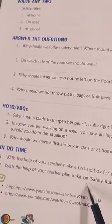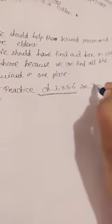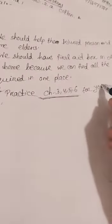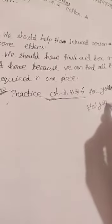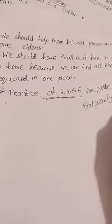With the help of your teacher, make a first aid box for your class and plan a safety kit — this is your homework. Write all the question answers in your science copy and practice them. For your half-yearly exam, you should practice chapters 3 to 6. Thank you. Stay home, stay safe.